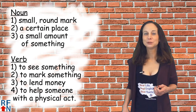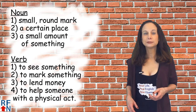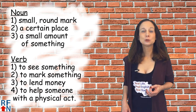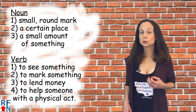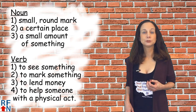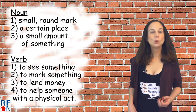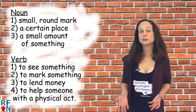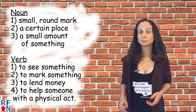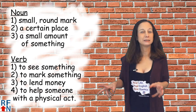Spot as a noun can also mean a small amount of something. It's usually used more in British English — someone might say 'a spot of tea,' which means just a little bit of tea. As a verb, 'spot' can mean to see or notice something, as in 'can you spot the difference?' It can also mean to mark or put spots on something, or it can mean to lend money — slang, as in 'can you spot me a 20?' meaning can you give me $20. It can also be used to help somebody do something physical, like in gymnastics.